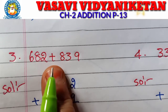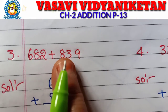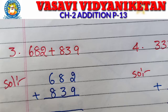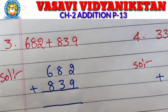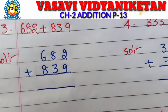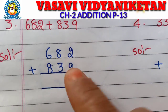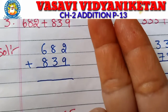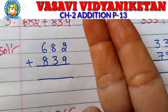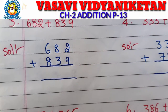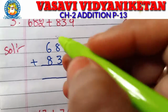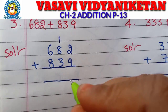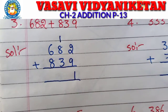Third problem: 682 plus 839. So write in columns and add. Start from the ones place — two plus nine. Take two fingers, nine after: ten, eleven. How much? Eleven. So one carries to the tens place, one stays in ones place.